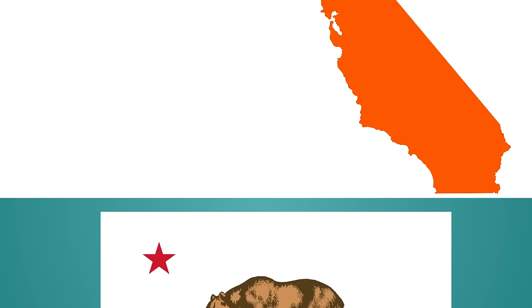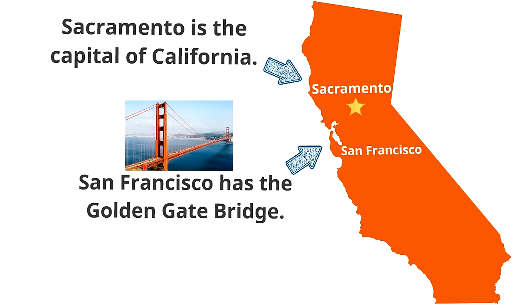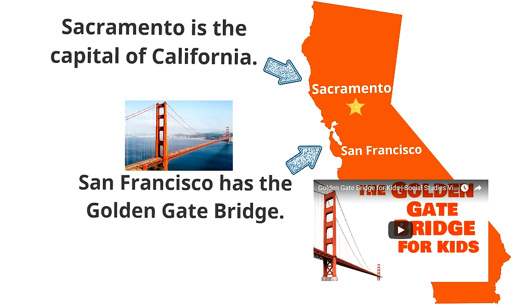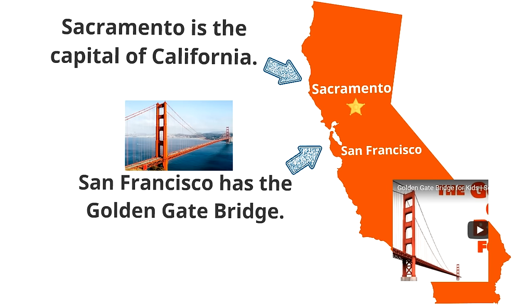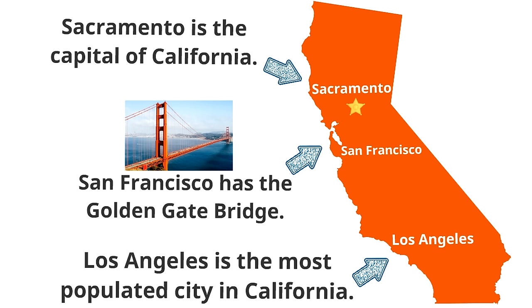Now let's look at some special places in California. Near the northern part of the state is Sacramento — Sacramento is the capital of California. Further south and right on the coastline is San Francisco, which has the Golden Gate Bridge. We have a video dedicated to the Golden Gate Bridge if you want to learn more. And way down south is Los Angeles, the most populated city in California.